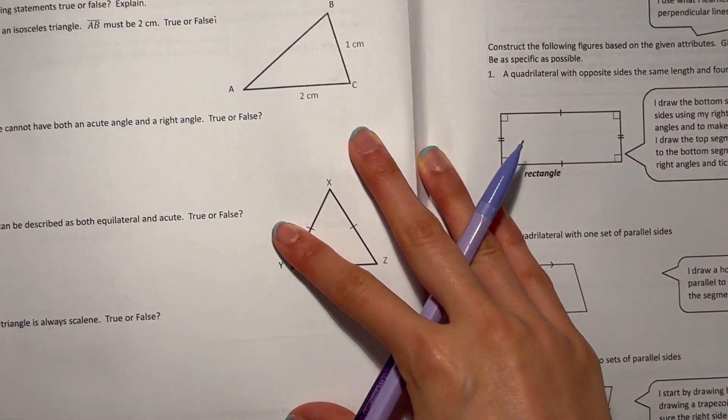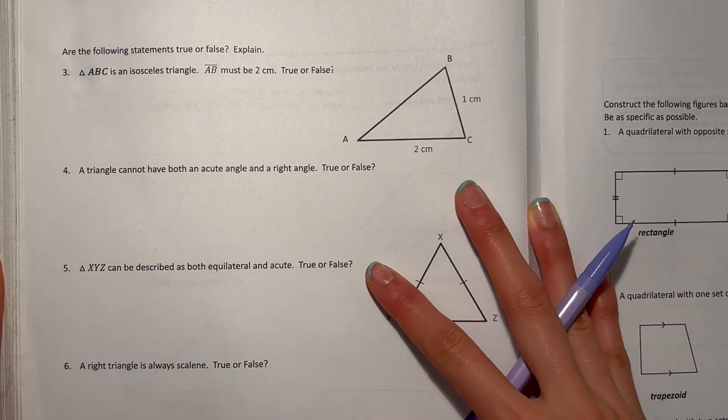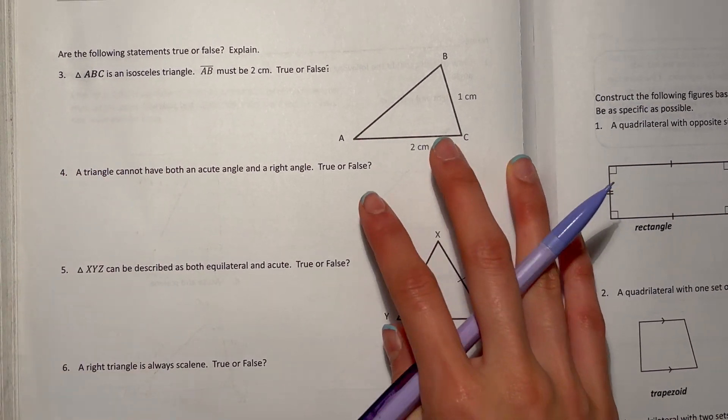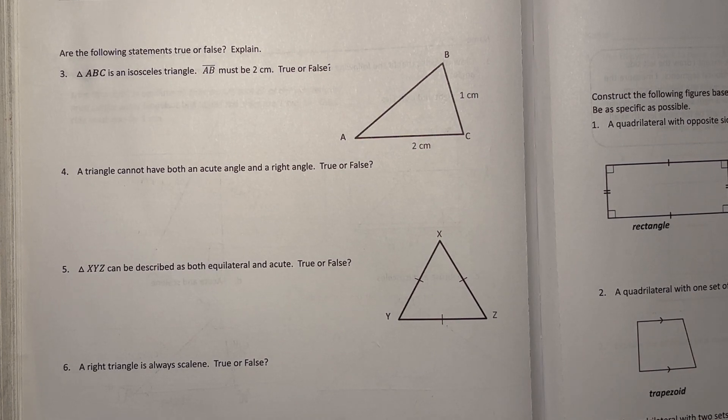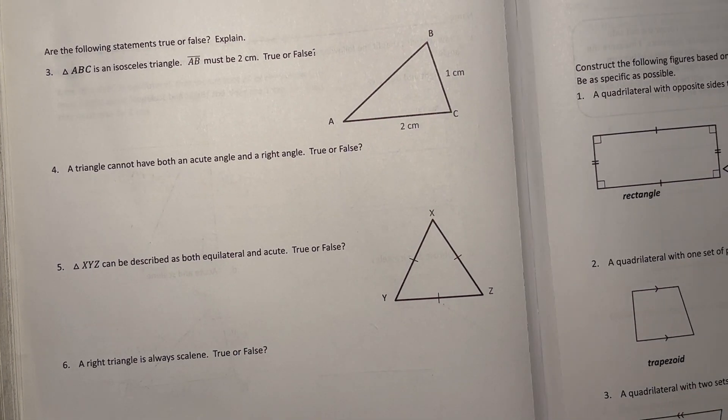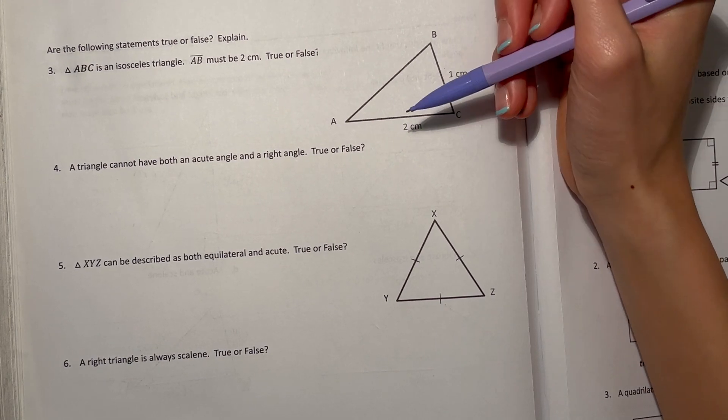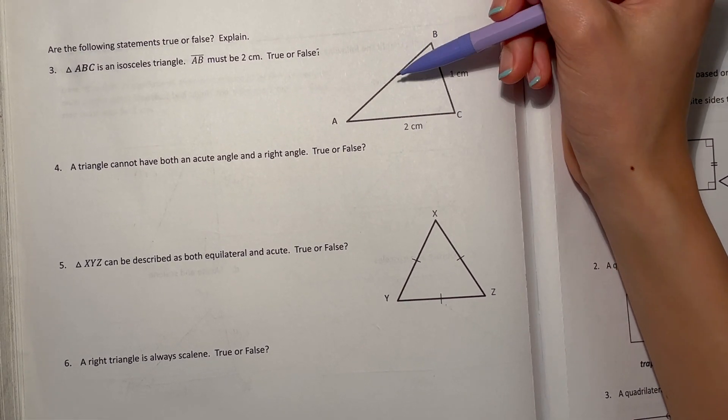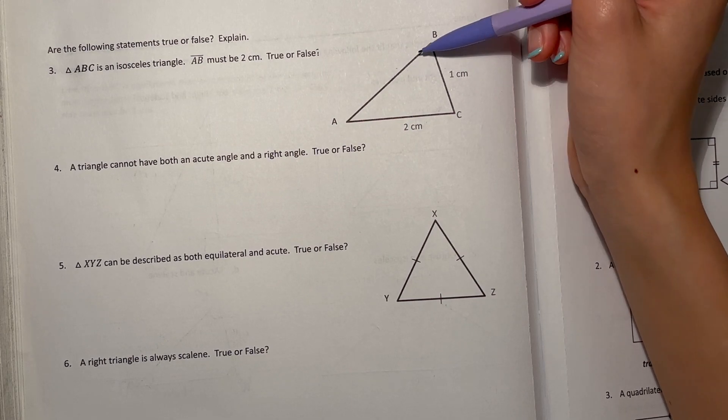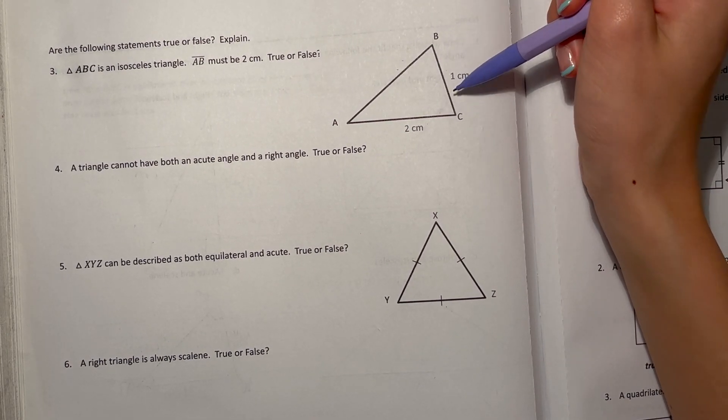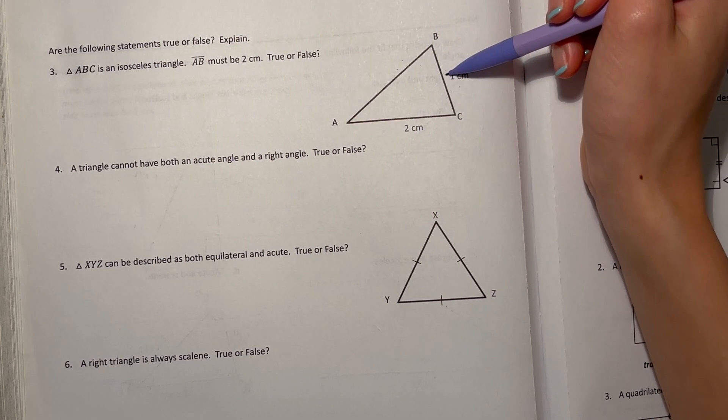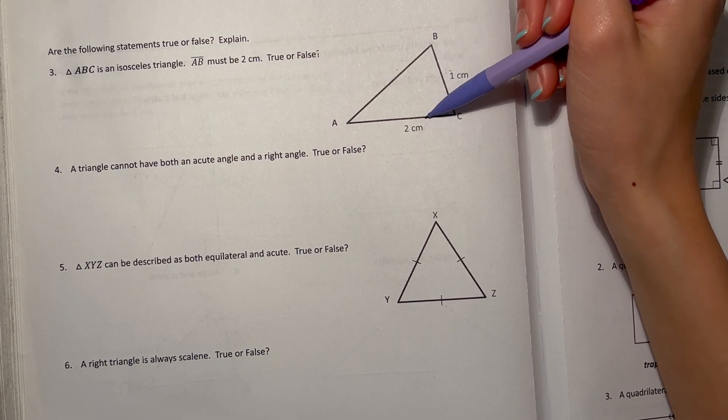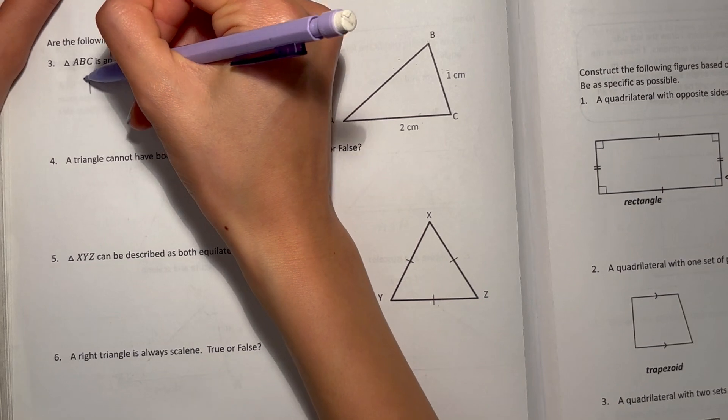All right, next page. Are the following statements true or false? Explain. Three: triangle ABC is an isosceles triangle. AB must be two centimeters, true or false? So remember, isosceles triangles have two sides that are equal length. So we have one centimeter here and two centimeters here. Then this last side should be equal to either the one centimeter or the two centimeters. And since it's obviously not equal to one centimeter, then it must be equal to the two centimeters. So this would be true.